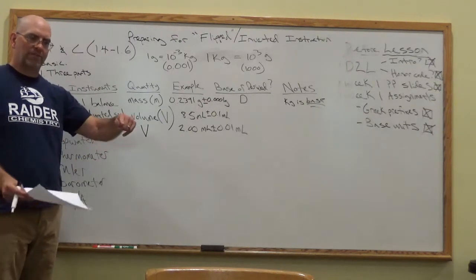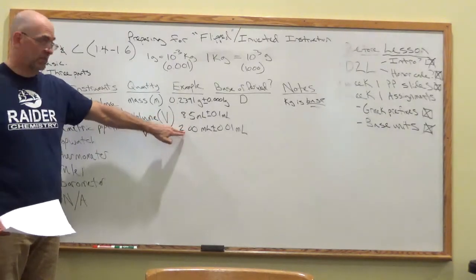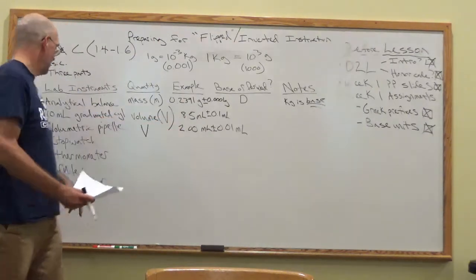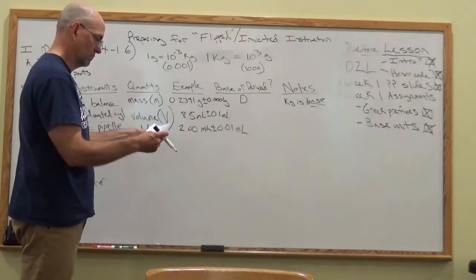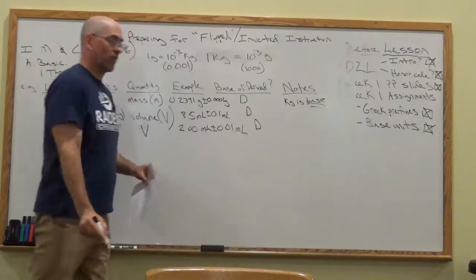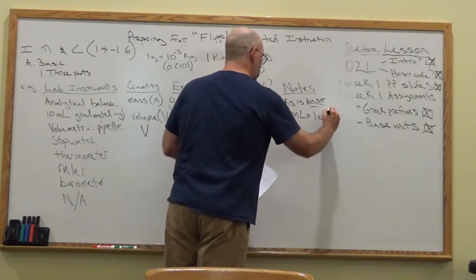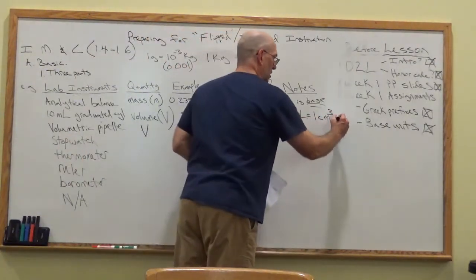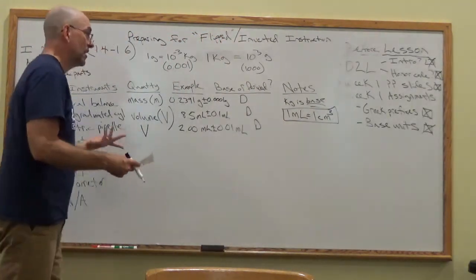A volumetric pipette looks like a long glass tube with a bulb in the middle — it measures just that one volume. It doesn't measure between zero and two; it measures only two milliliters, for example, but it does it very, very well. Also, milliliters are actually derived units: a milliliter is equal to a cubic centimeter. That is a very useful piece of information — it comes up all the time in this first part and throughout science.